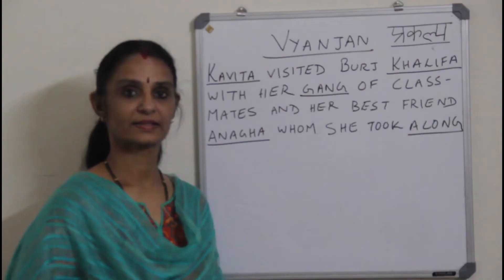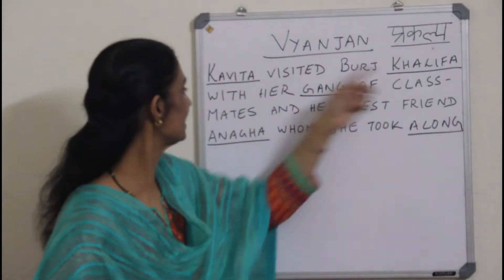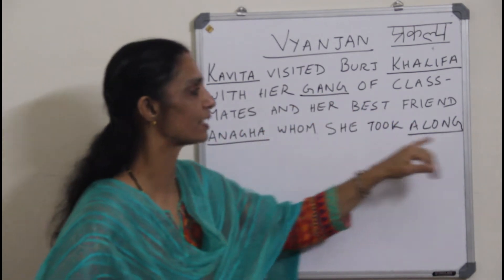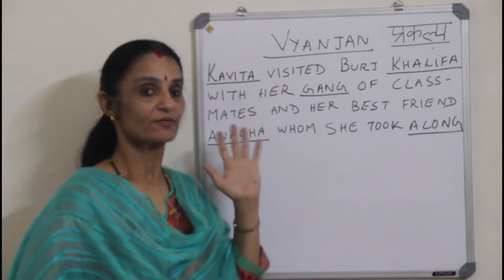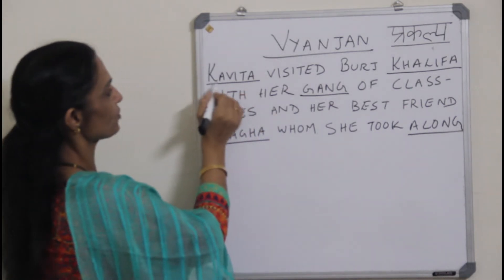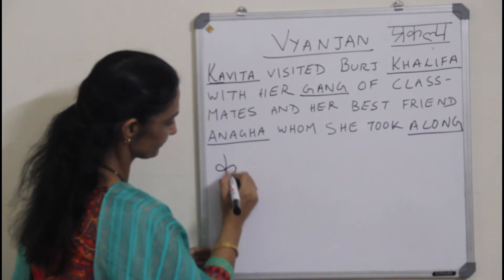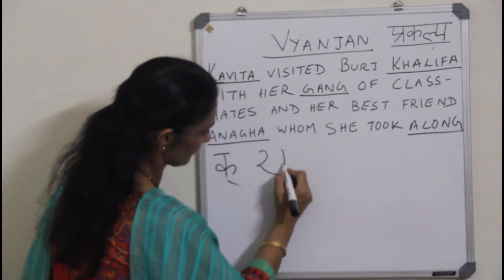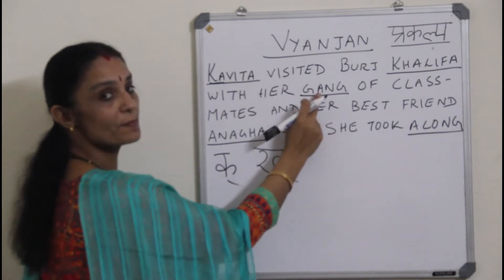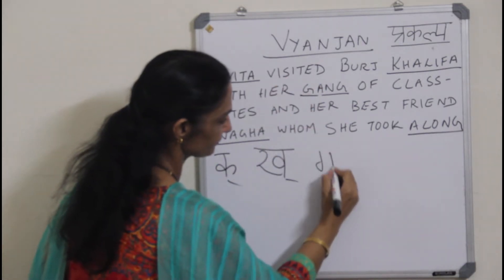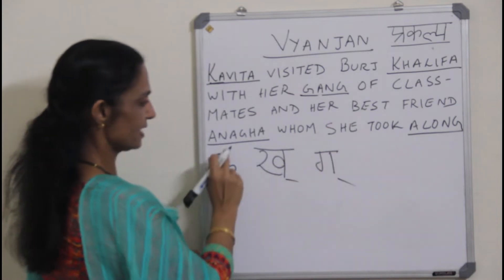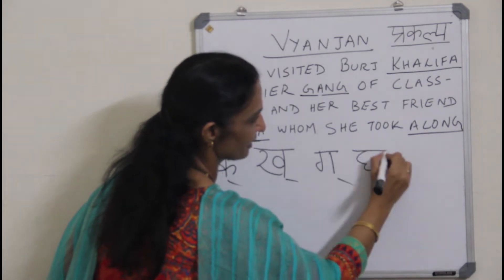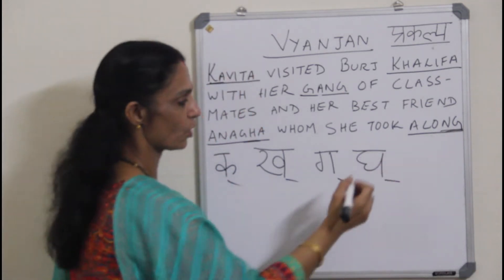Let us learn how to write using a sentence: 'Kavitha visited Burj Khalifa with her gang of classmates and her best friend Anagha whom she took along.' I have underlined 5 words. The first Vyanjan I am taking from Kavitha. The second one I am taking from Khalifa. The third one is from Gang. Then GH from Anagha. And the last one, NG from along.